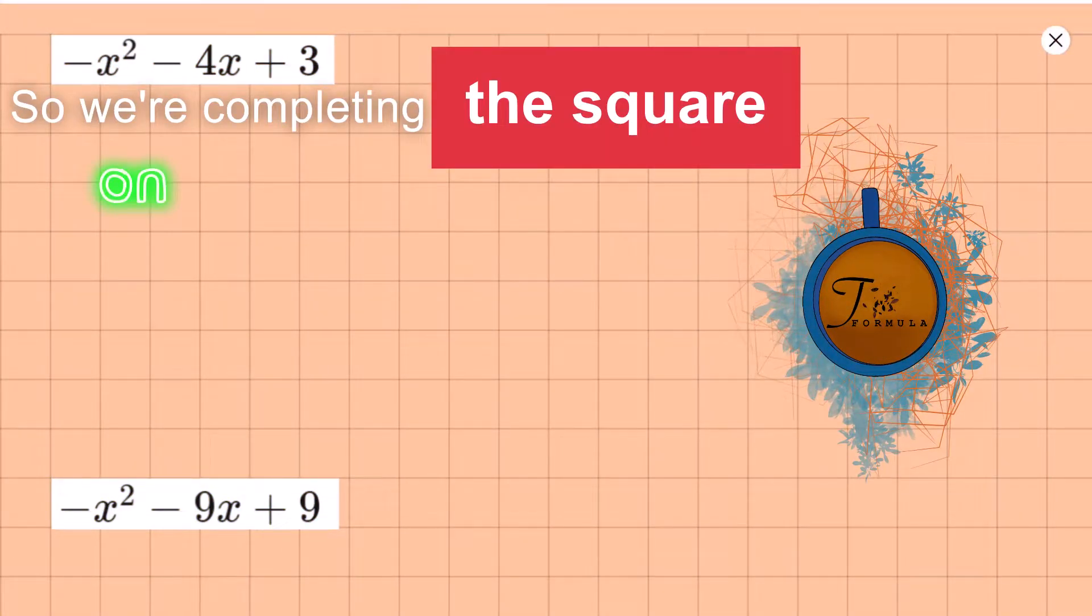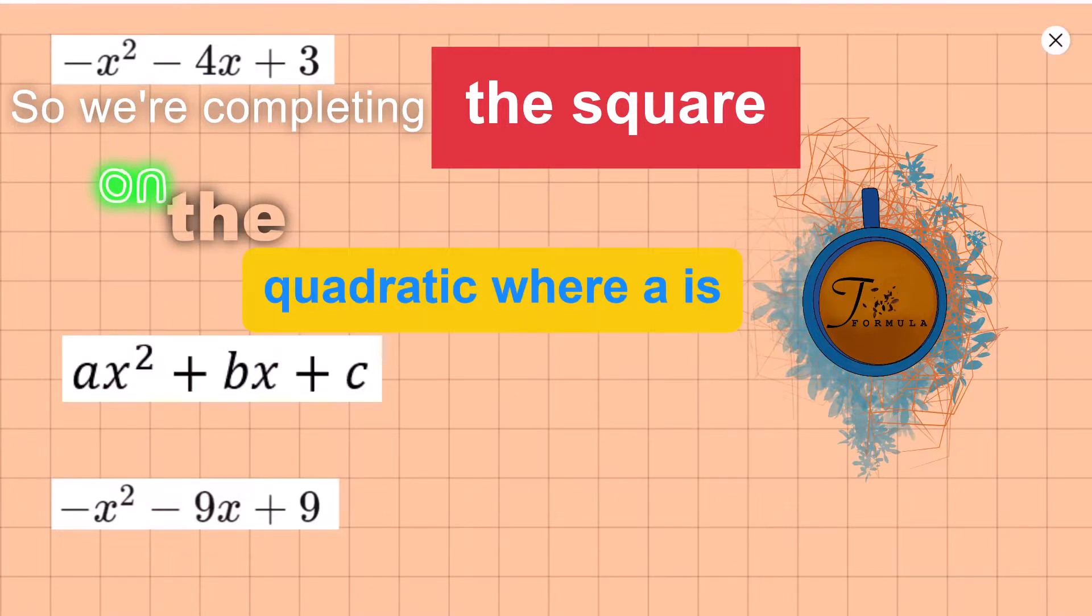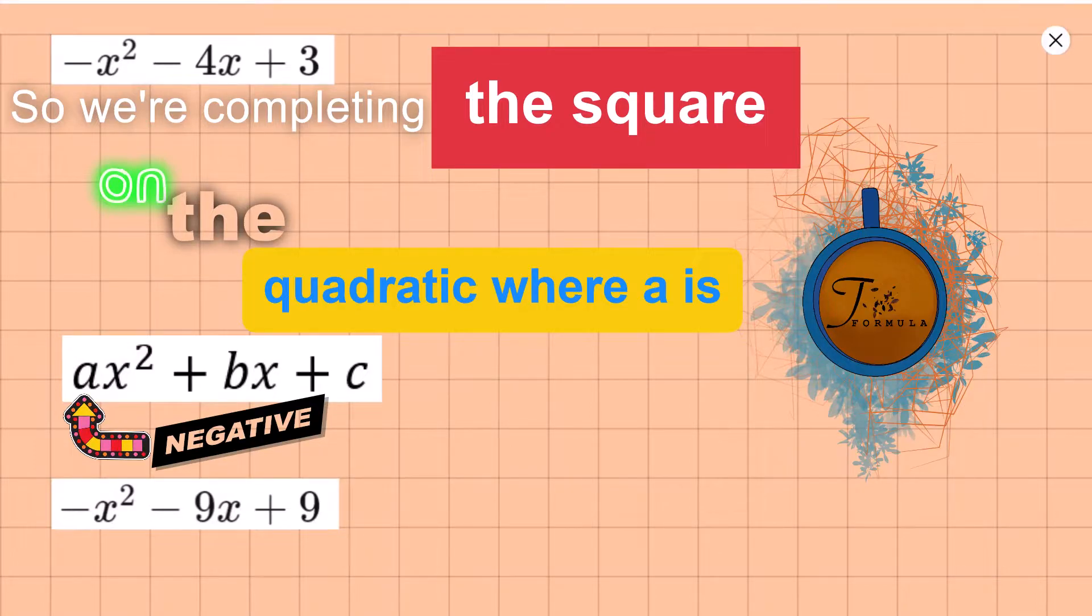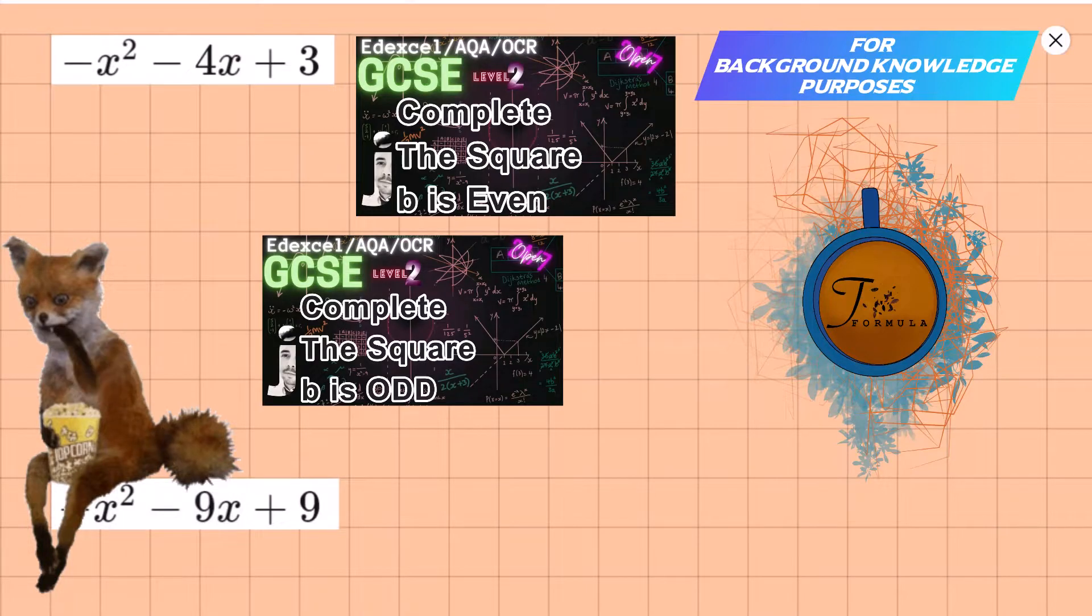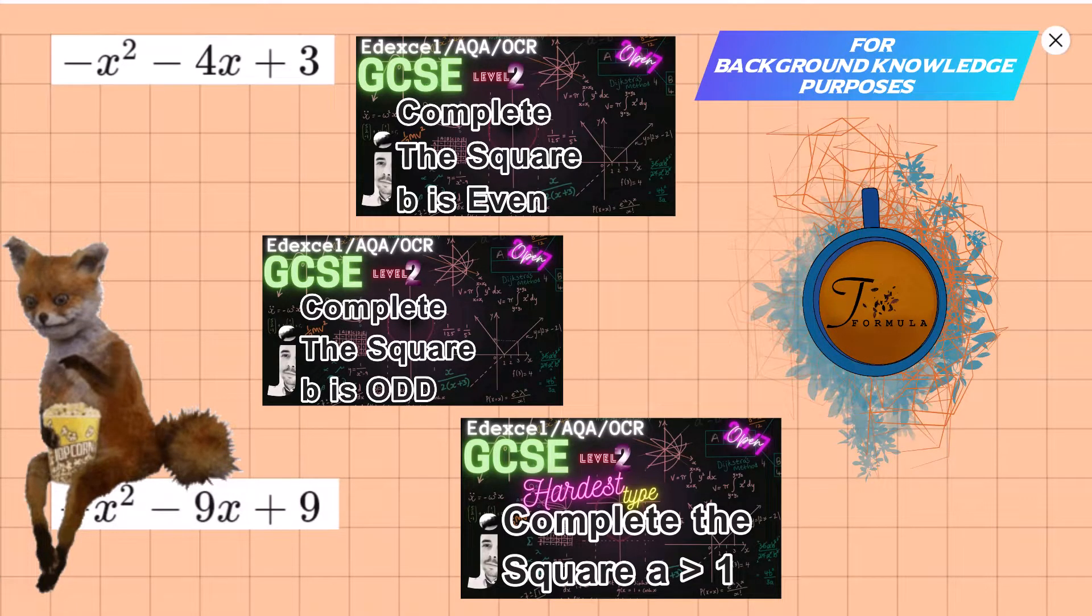So we're completing the square on the quadratic where a is negative. You might wonder why this one gets its own video. Before we talk about this one, it's probably better if you look at the videos entitled B is even, B is odd, and actually also where a is more than one.